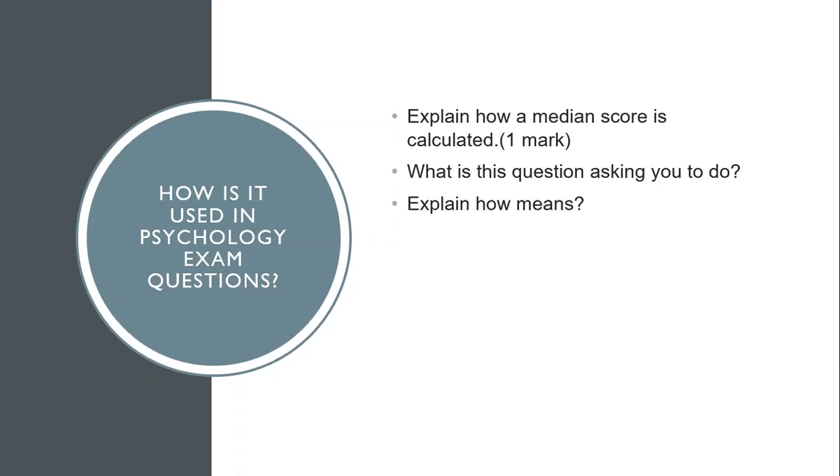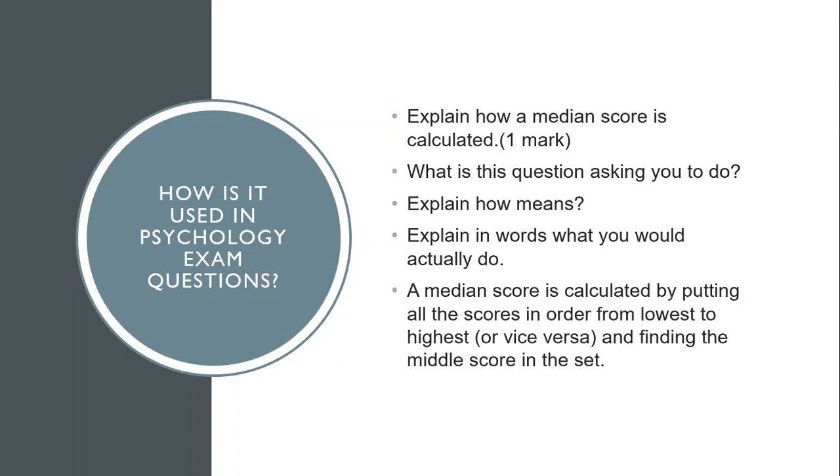Explain how means you've got to, in words, not demonstrate it by showing example, explain how you would actually calculate it and that means what you would actually do. Simple. A median score is calculated by putting all the scores in order from lowest to highest or vice versa and finding the middle score in the set. That's how it's done. That's how it's calculated.